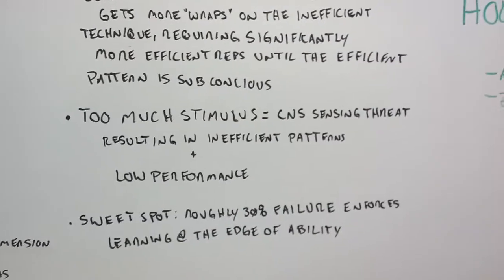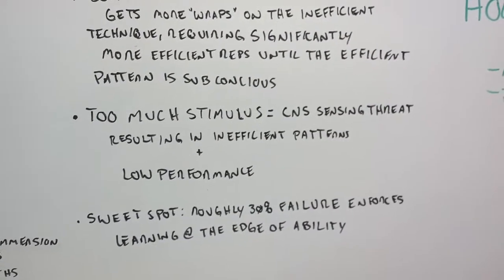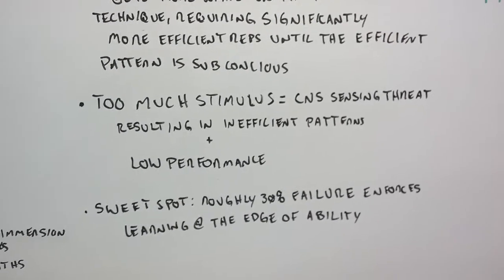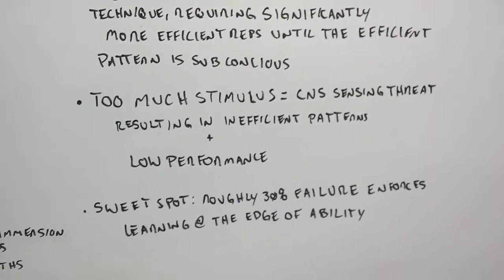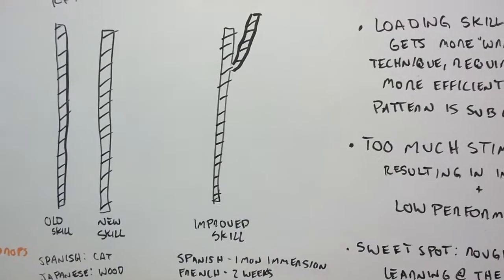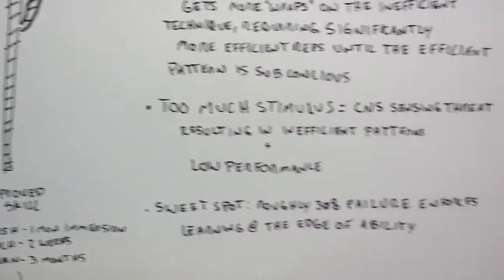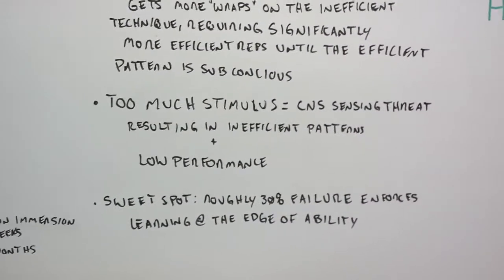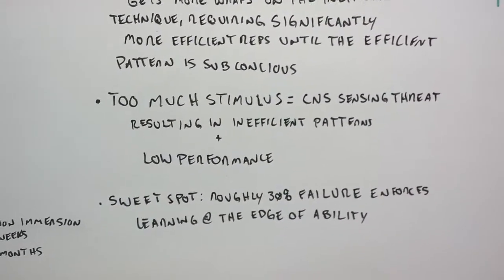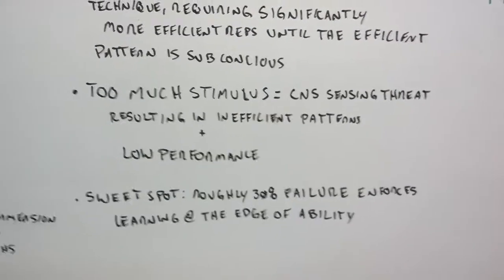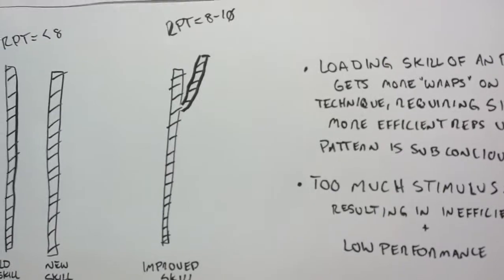The other part of that, too much stimulus - the CNS, the central nervous system, is going to start to sense threat. What that's going to do is result in inefficient patterns and low performance. So another thing we don't want to do is add too much at once. Now with that, there is a sweet spot. Roughly 30% of the time you should be failing. What that'll do is that'll push you to the edge of your ability. Now with that, you want to still be technique of an 8, 9, or 10 out of 10.